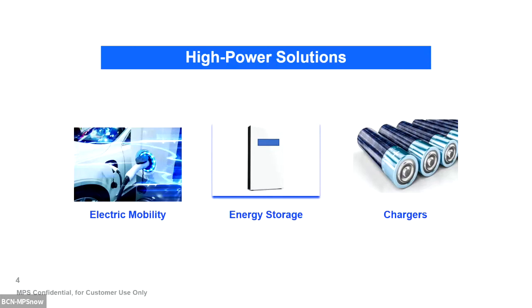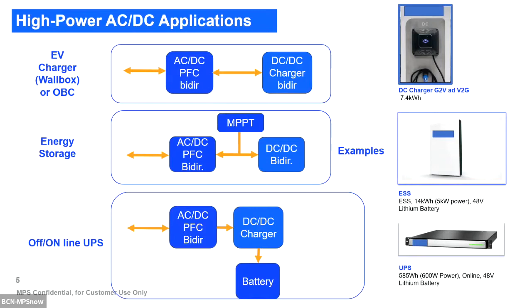We have seen in recent years a steady increase in high power applications, especially battery-based ones in the areas of electric mobility — not only cars but also motorbikes or small mobility devices. We have also seen the need for new applications in energy storage, new architectures, and in general for any charger that needs to charge batteries at high voltage or high power. Looking in more detail at these AC-DC and DC-DC products, we need different features and more efficiency than before.